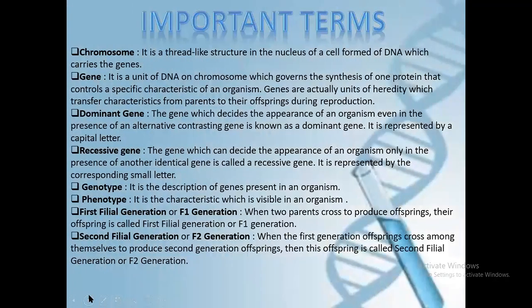Important terms of chromosome. Chromosome: it is a thread-like structure in the nucleus of a cell, formed of DNA, which carries the gene. Gene: it is the unit of DNA on a chromosome which governs the synthesis of one protein that controls a specific characteristic of an organism. Genes are actually units of heredity which transfer characteristics from parents to their offspring during reproduction.